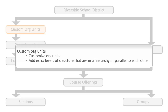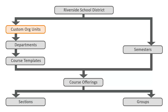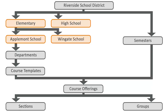These optional org units can be in a hierarchy or parallel to each other. If you have multiple schools within a school board, it can be helpful to divide your org structure by these locations if they have a unique set of course offerings. For example, the Riverside School District is made up of both elementary and high schools. The custom org units further subdivide these school types into the Applemont and Wingate schools.